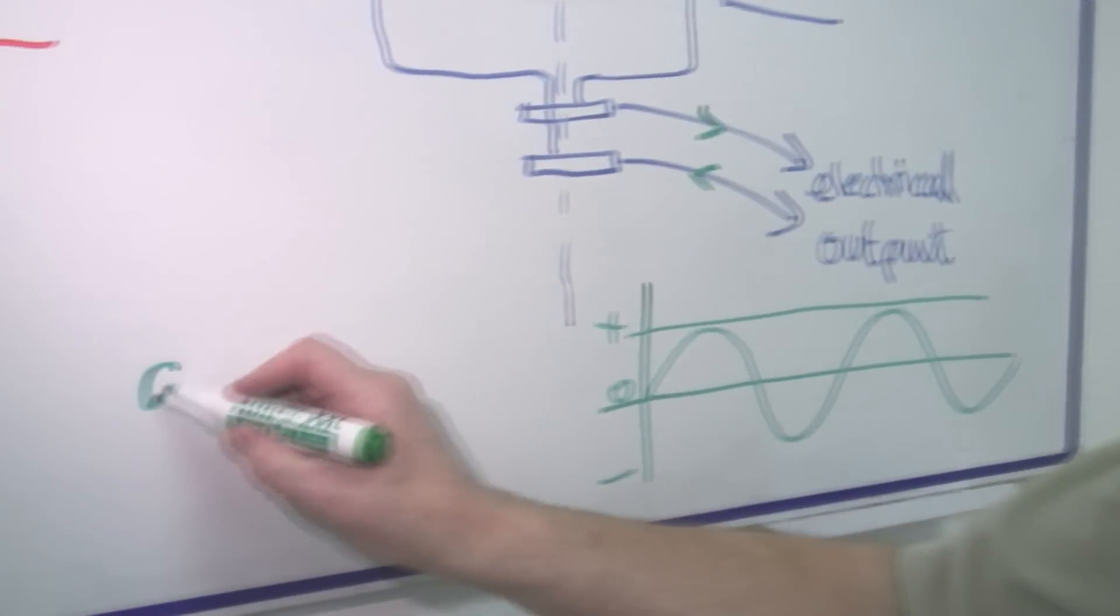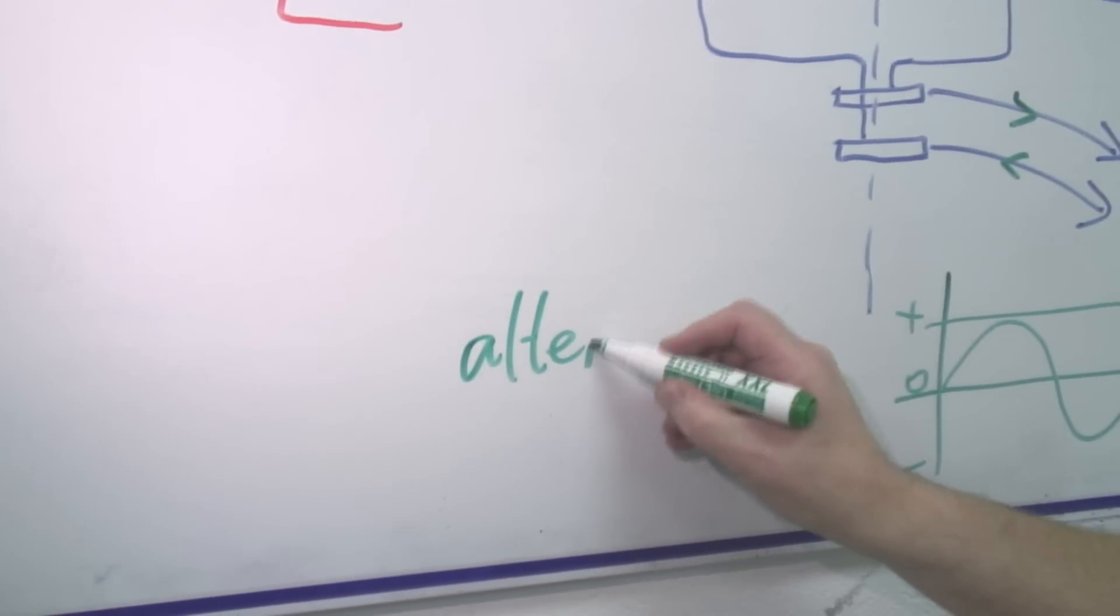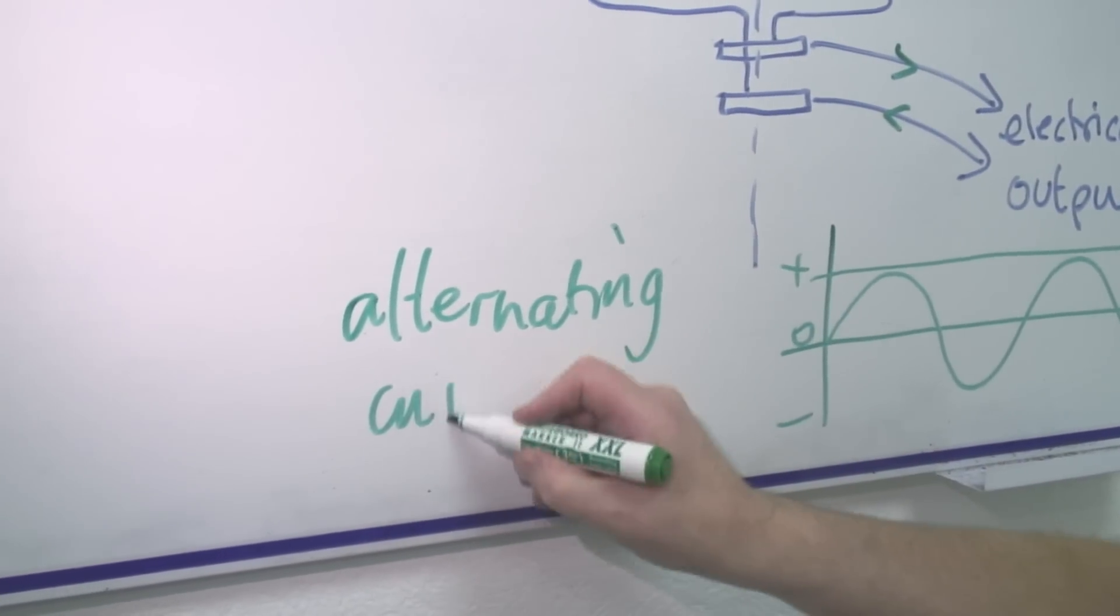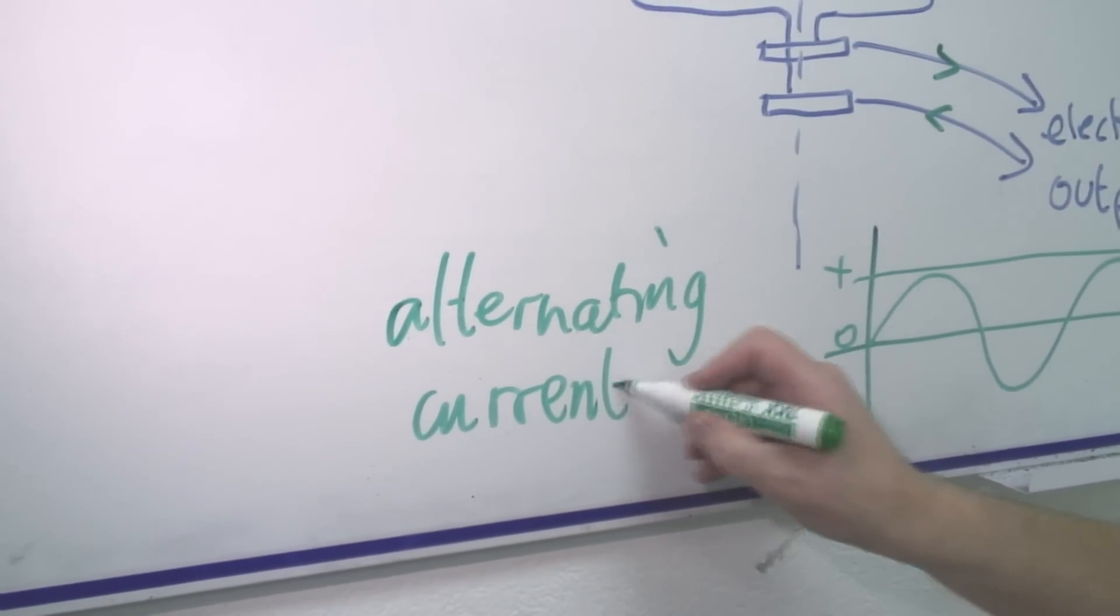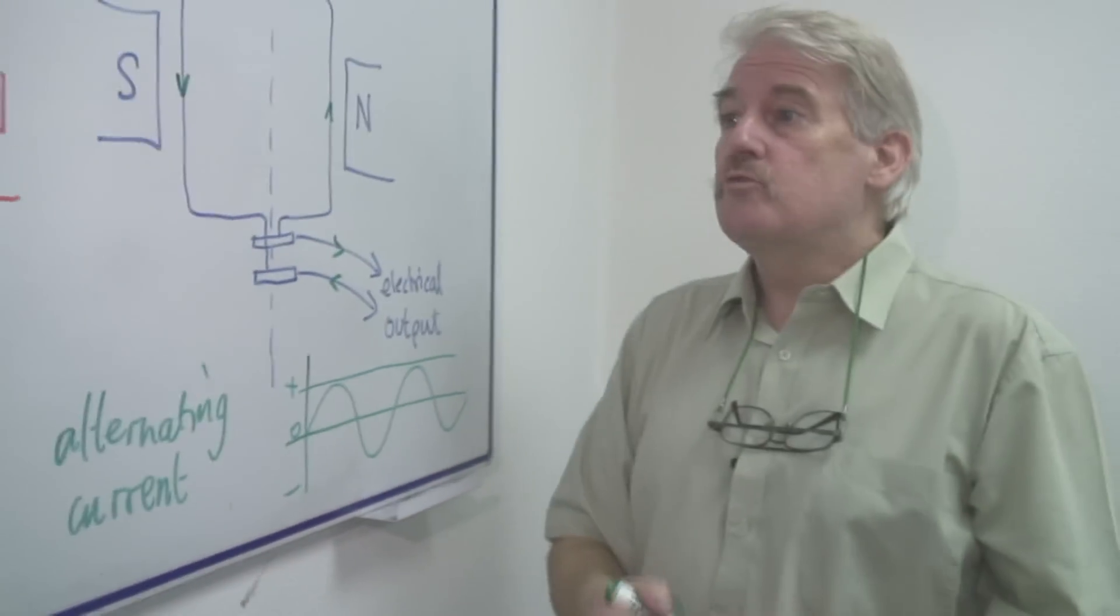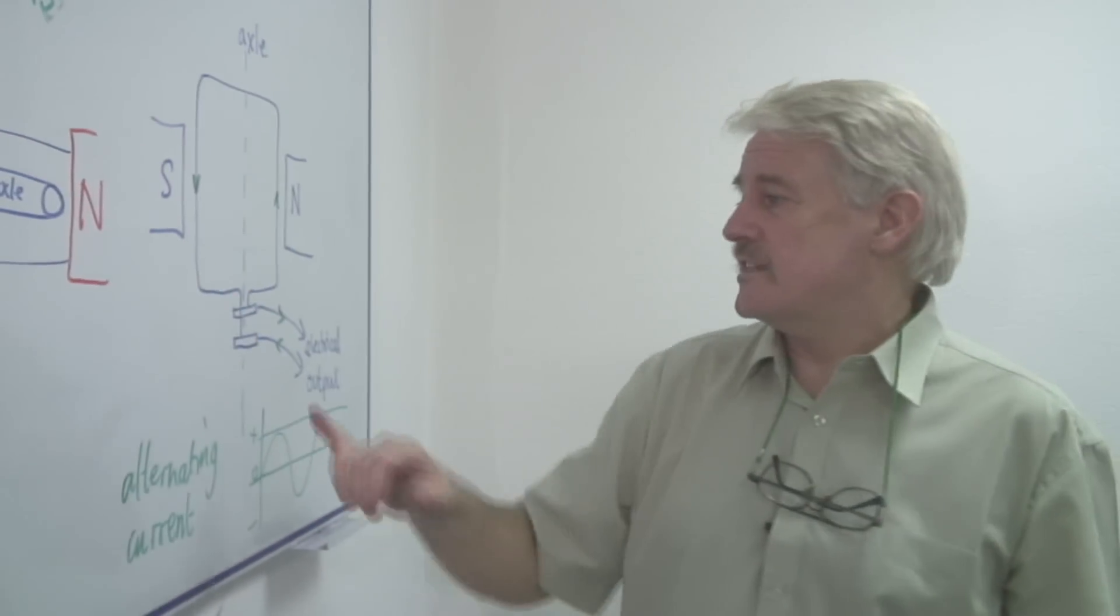Alternating current. So this alternating current, which is what you have in your home and what you get from the mains, is what you will get from a generator of this kind.